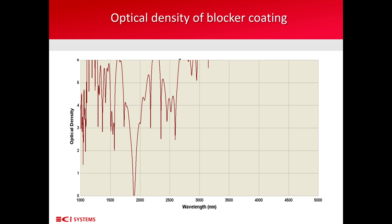In this graph, you can see a spectrum of optical density of a blocker filter coating in the range of 1,000 to 5,000 nanometers. The optical density is the negative logarithm at base 10 of the transmittance of the filter. So, at the position of the peak, you can see near the 2,000 nanometer wavelength, the optical density is almost zero.